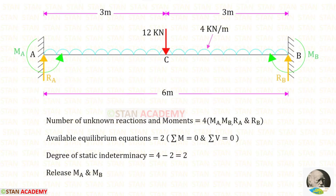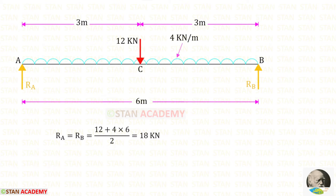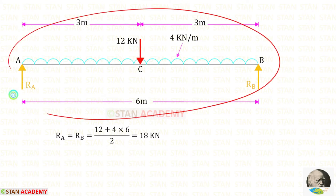The degree of static indeterminacy of this beam is 2. To make this beam statically determinate, let us remove MA and MB. When we remove both of them, this fixed beam will become a simply supported beam.